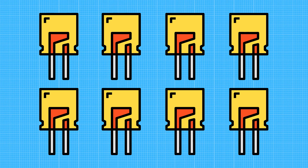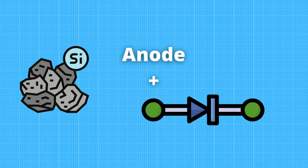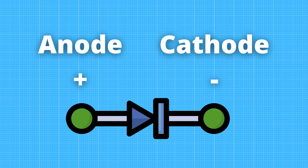It is made up of a semiconductor material, such as silicon, and has two terminals: an anode and a cathode. When voltage is applied to the diode, current will flow from the anode to the cathode. When the voltage polarity is reversed, no current will flow through the diode.